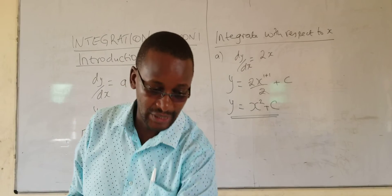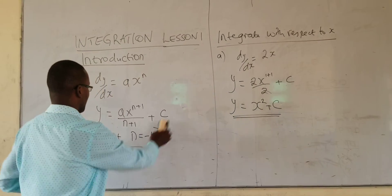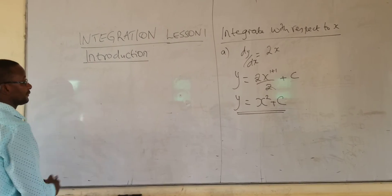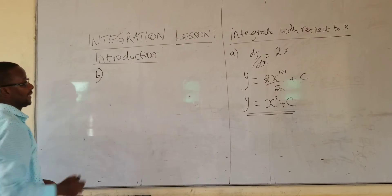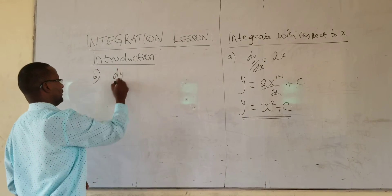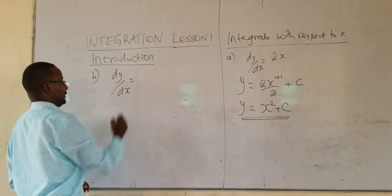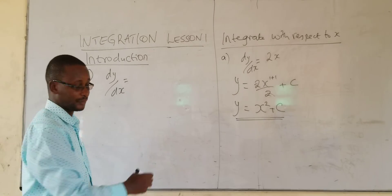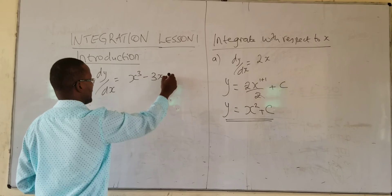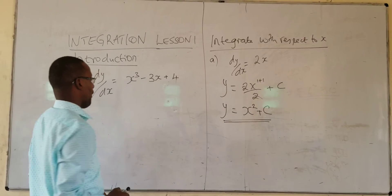So at your own time, I would like you to integrate this one. Take time and integrate this one. dy over dx is equals to x cubed minus 3x plus 4.